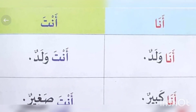In this lesson we are going to learn pronouns. Two pronouns are used in this lesson. One is 'ana,' which means 'I am.' Second is 'anta,' which means 'you are.' Now let's translate Arabic sentences into the English language.